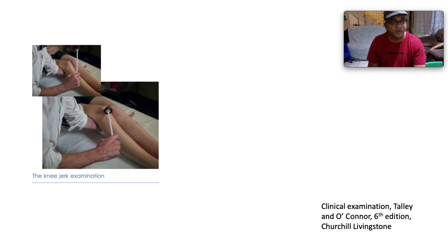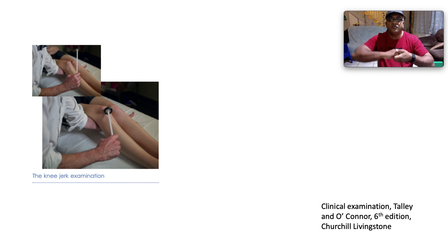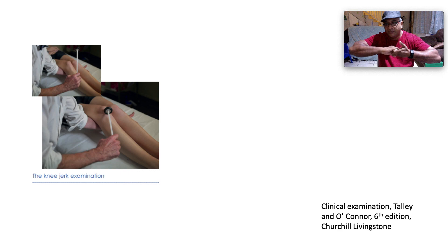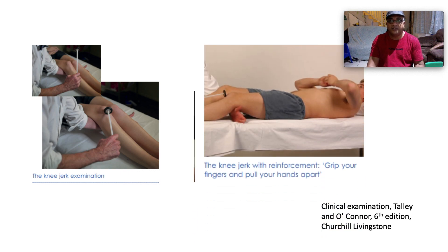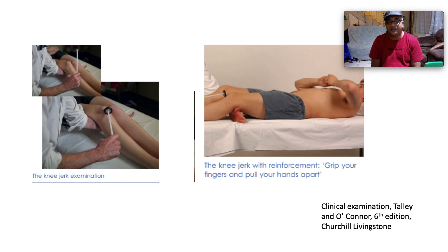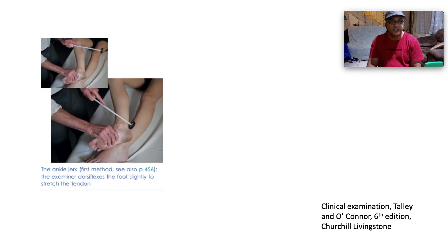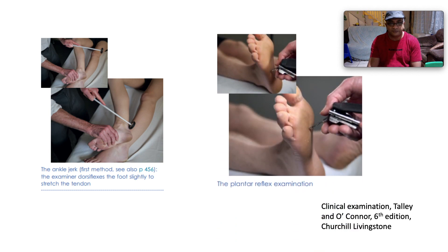For the knee jerk (L3-L4), get the patient to relax and support the weight of their leg on your non-dominant hand. If you can't elicit the reflex, use Jendrassik's maneuver — ask the patient to clench their teeth or hook their hands together and pull apart, which distracts and relaxes them. You are looking for contraction of the quadriceps. For the Achilles reflex, dorsiflex the foot slightly to stretch the tendon before striking. For the plantar response, a positive result is fanning of the toes and dorsiflexion of the big toe, indicating an upper motor neuron lesion.